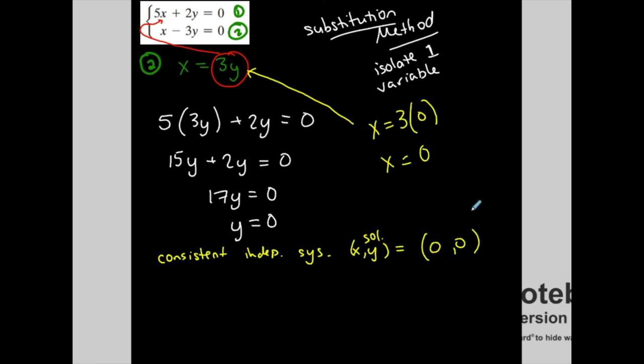Consistent, independent system. The solution is (0, 0), which is the one solution. It's the intersection of the two lines at the origin.